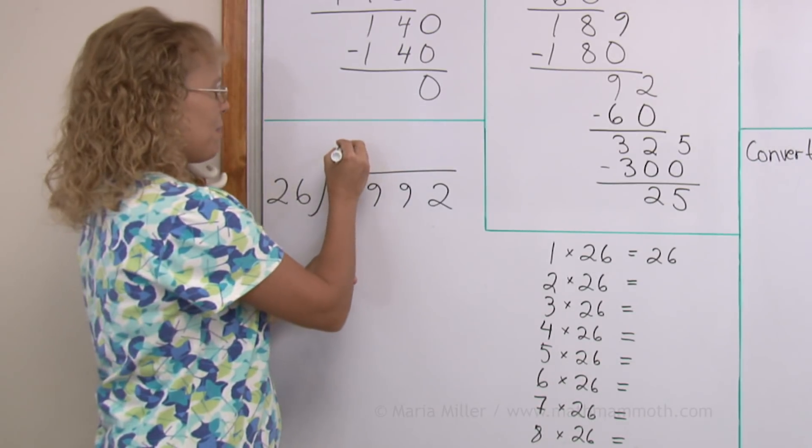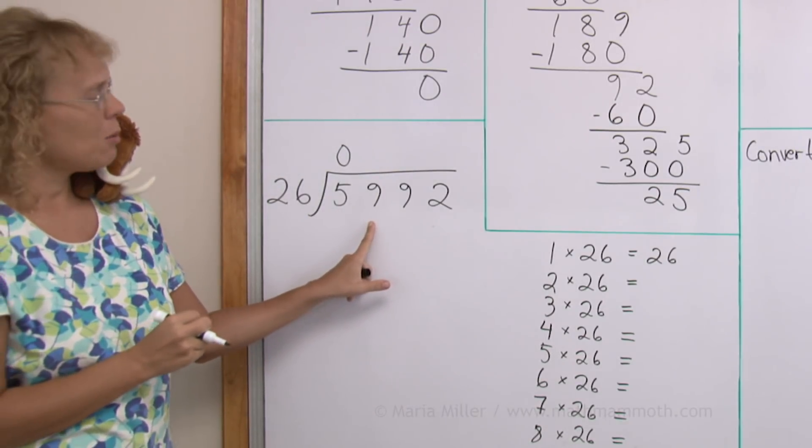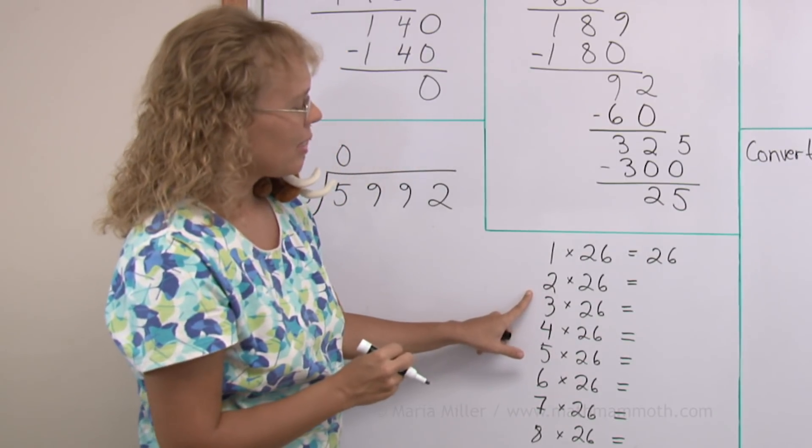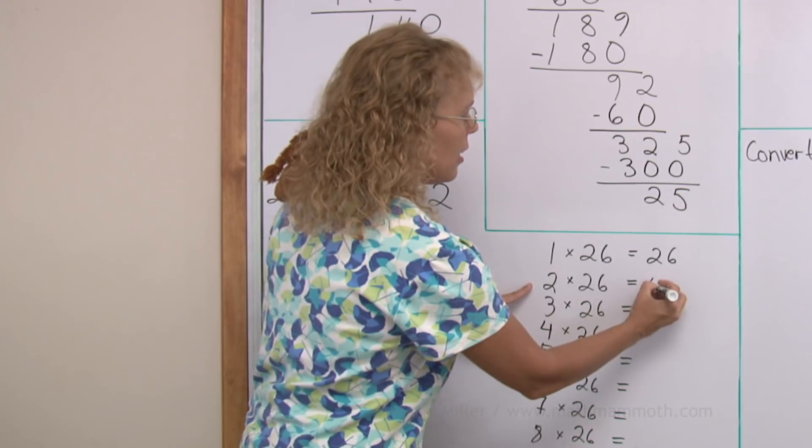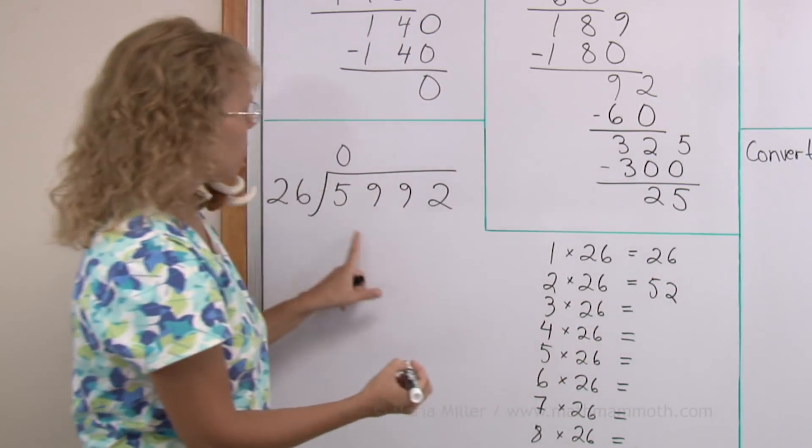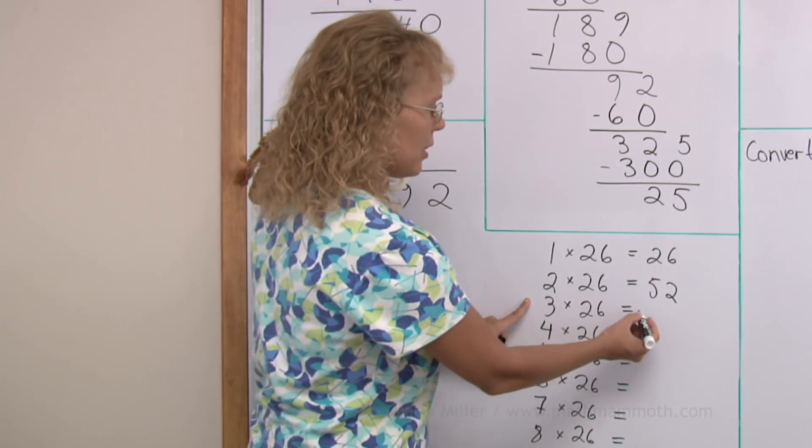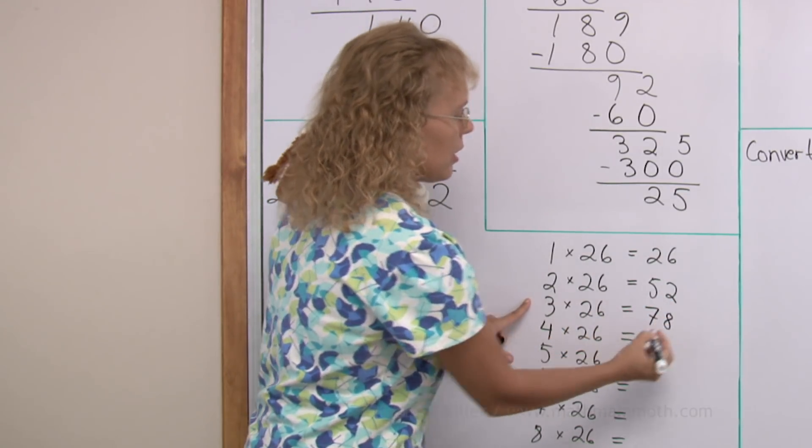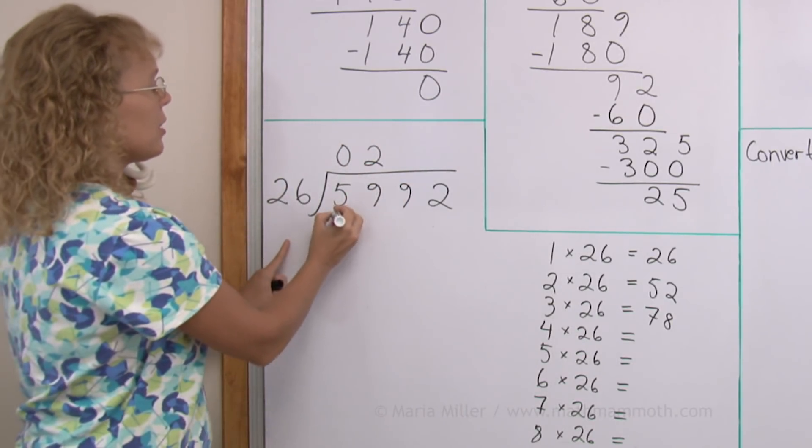It does not go into 5. Into 59. Can you tell how many times? Here's where we can maybe get help from here. 1 times 26 is 26. And then double that is 52. So, it would look like it goes 2 times, right? 3 times 26. You can just add 26 to this. 78. So, yes. 2 times. 2 times 26 is 52.